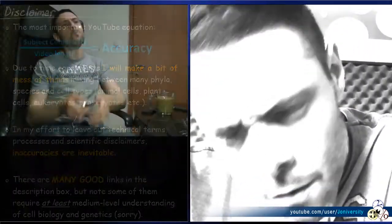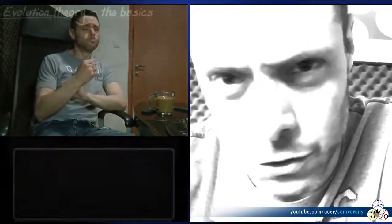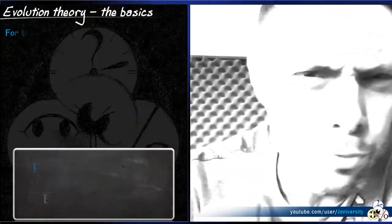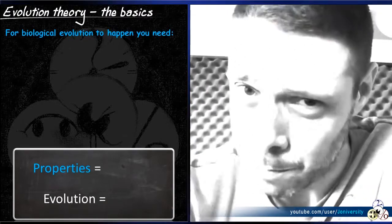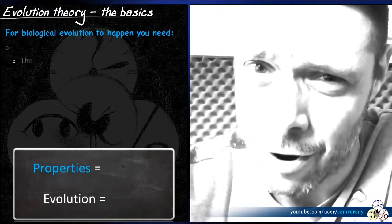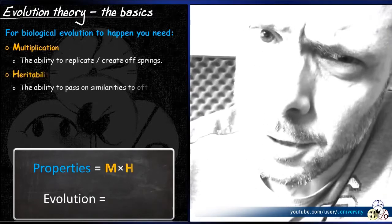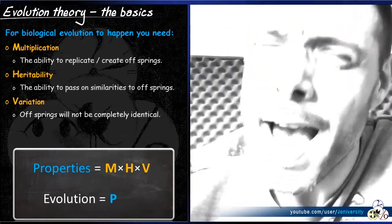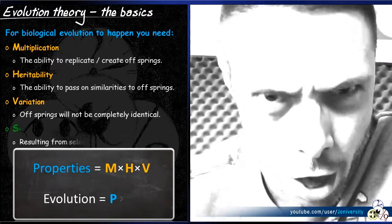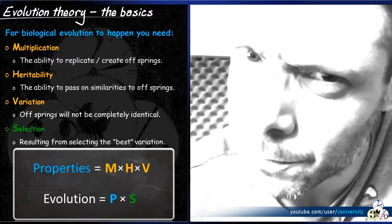So first, the basics. For biological evolution to occur, you need three properties and one force. The properties are: Multiplication, Heritability, and Variation. And the force acting upon them is Selection — whether natural or not.